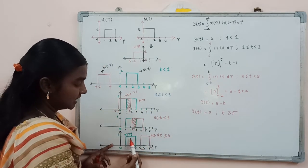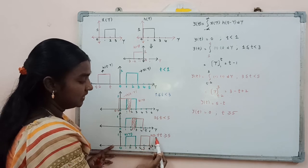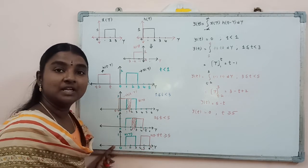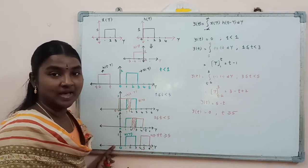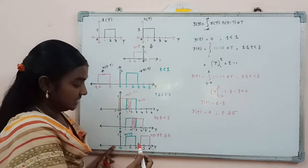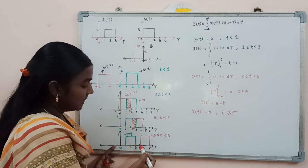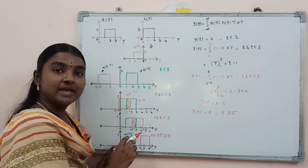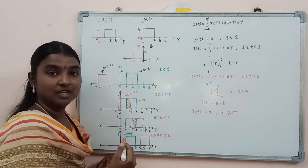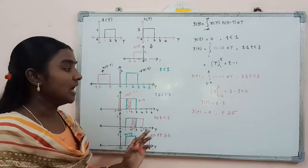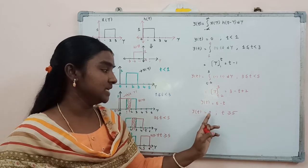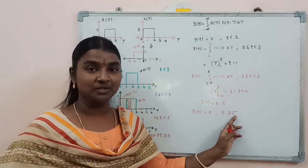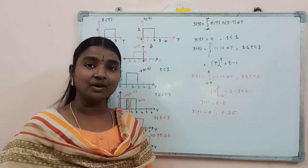Moving to the next graph, this shows x(τ) and h(t-τ) in the period t ≥ 5. In this case, there is no overlapping area between x(τ) and h(t-τ), so the output signal y(t) = 0 when t ≥ 5.